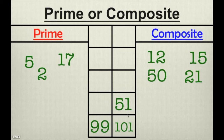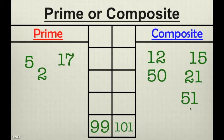How about 51? Believe it or not, 51 is composite. A lot of students think, oh, it ends in a 1, it has to be prime. Not true. Look at 21 — it ends in 1 and it's not prime at all. 51 has factors of 1 and 51, but it can also be divided by 3 and 17.